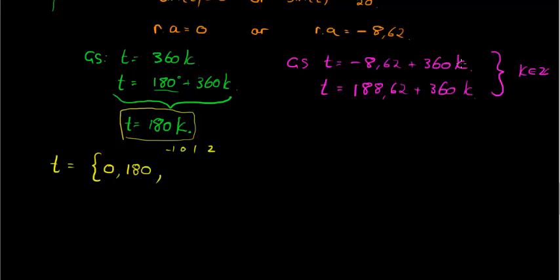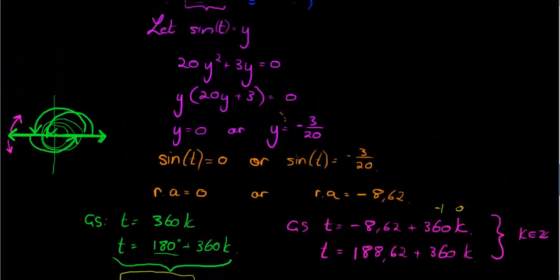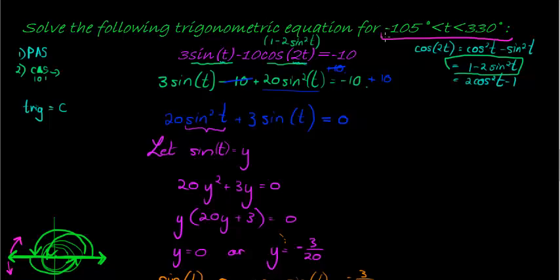For this one, if k is equal to 0, I get negative 8.62. That is bigger than negative 105, so negative 8.62 is one of the solutions. If I make it negative 1, then I've got negative 360 minus another 8, so that's negative 368. That's way too small.